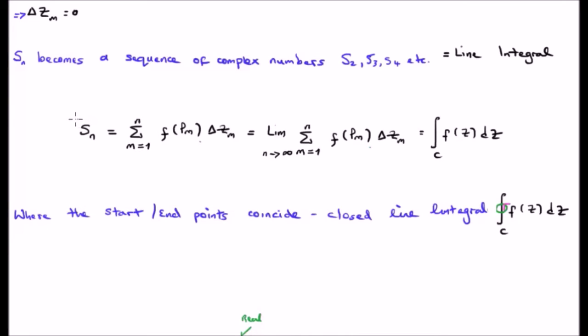To write that explicitly, we have our sum here, and in the limit, it becomes our line integral. So, we say we have integral along the curve C of f of z dz.